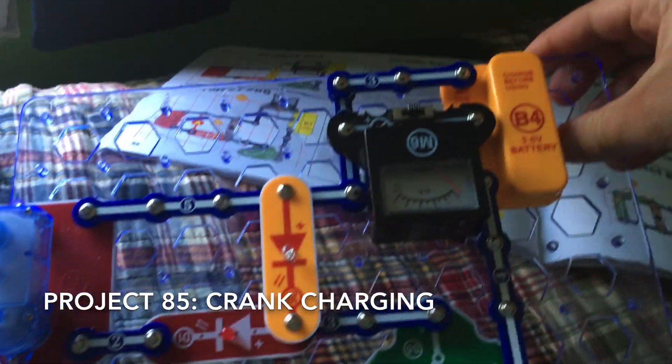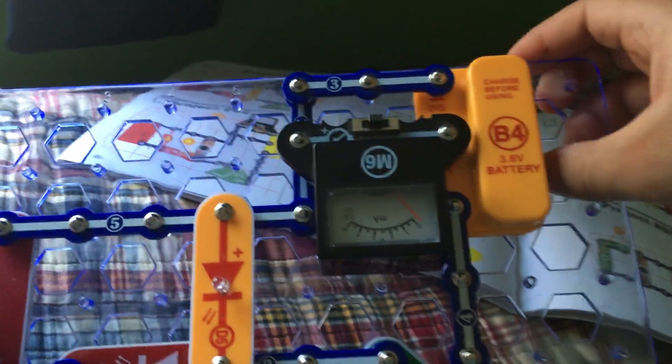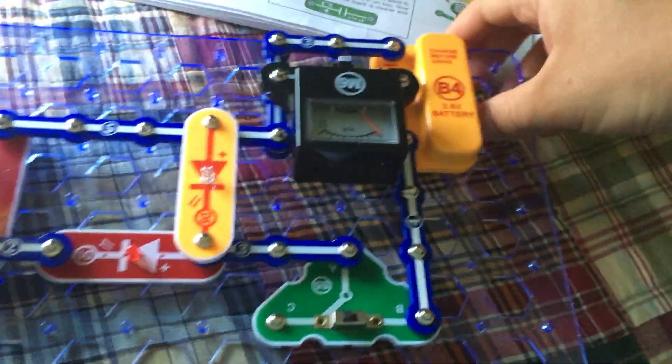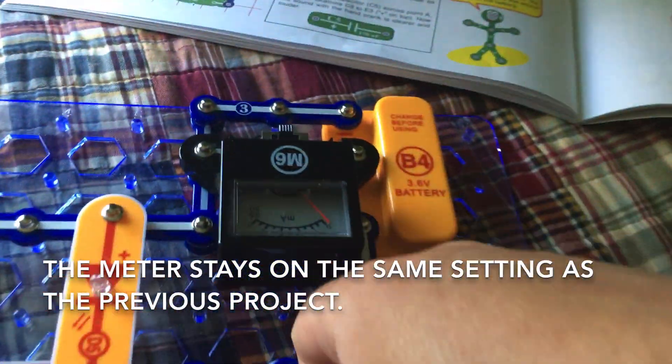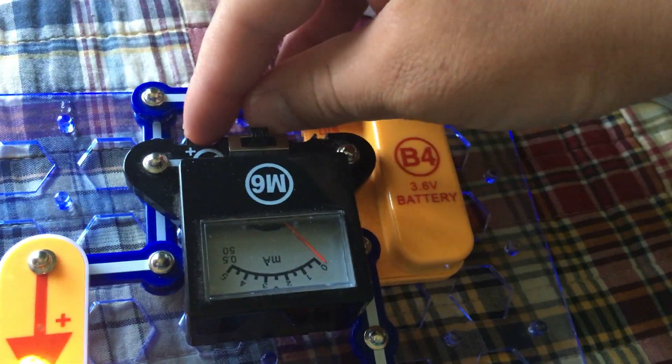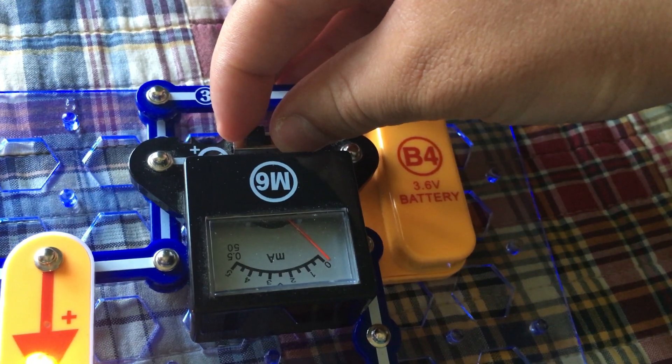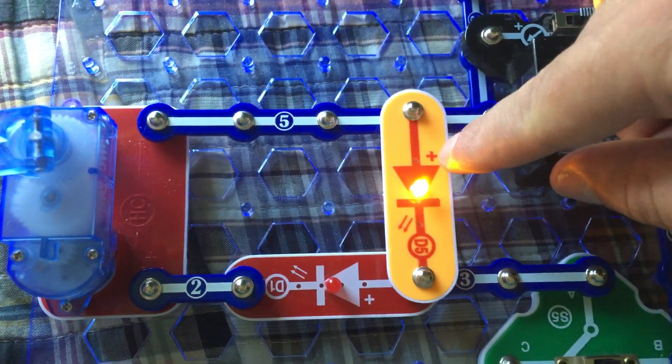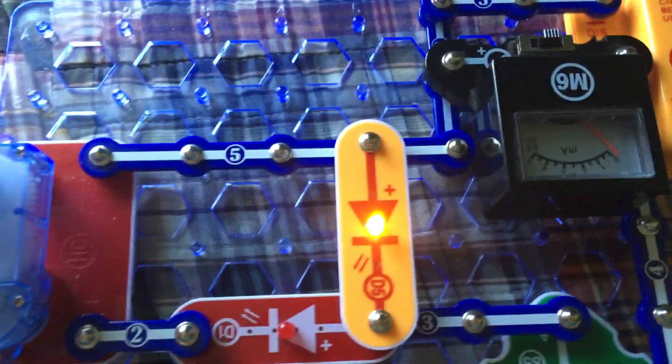Project 85 is kind of like the reverse for the previous project. When we turn the slide switch to the B position, the meter shows no current. When it's either on the 0.5 or 50 milliamp setting. The yellow LED is on.